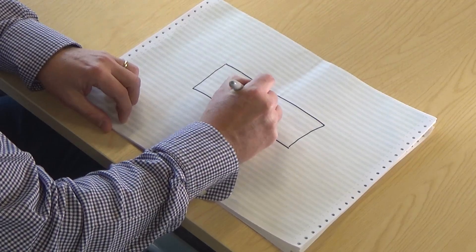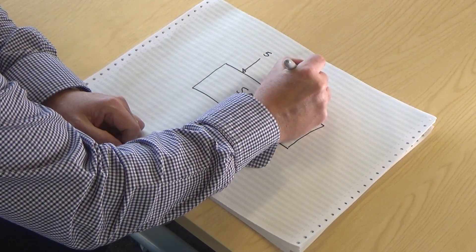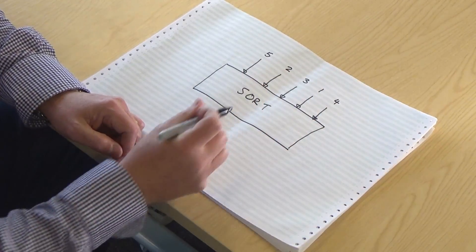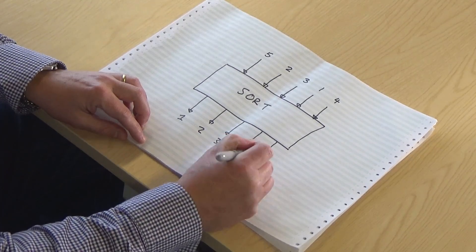We'll start off by refreshing ourselves with pictures about what sorting actually is. So let me draw a box. What we're going to do is put some numbers into this box — it doesn't matter how many, but we'll do it with five. Suppose we put in 5, 2, 3, 1, and 4. These are in some random order, not sorted, not in ascending order. What we'd like our sorting box to do is give us the same numbers out in sorted order: 1, 2, 3, 4, and 5.